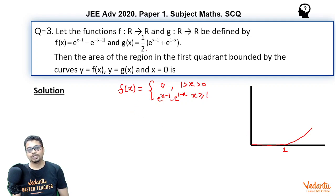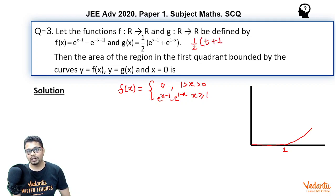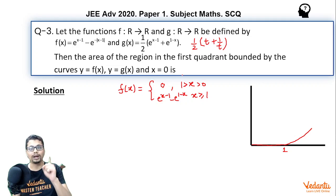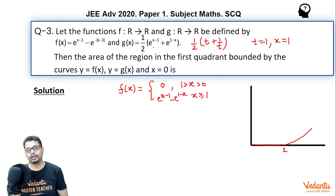Now, what about g(x)? g(x) = ½ · (e^(x−1) + e^(1−x)). This is of the form ½ · (t + 1/t), where x−1 is the power of the first term and −(x−1) = 1−x is the power of the second term. So it is of the form ½(t + 1/t) where t is positive. Therefore, t + 1/t has a minimum value when t = 1, and t = 1 when x = 1 (since e^(1−1) = e^0 = 1). Before and after x=1, the values will be more than the value at x=1.